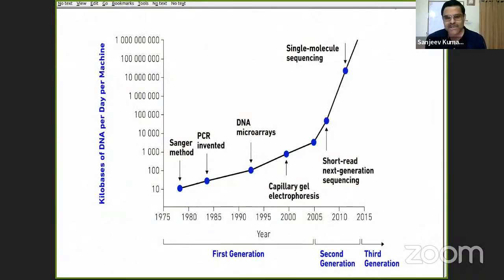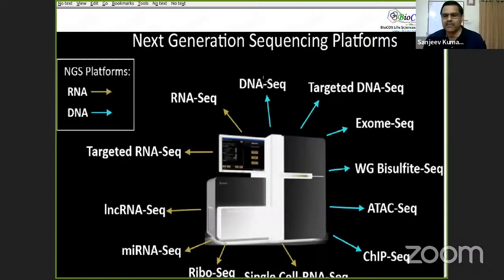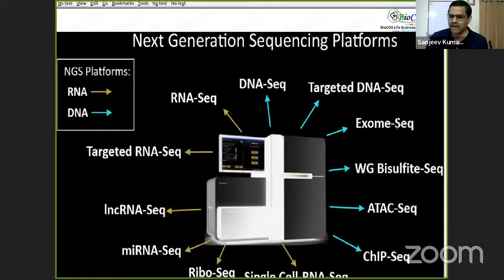Looking at the history of NGS: we had Sanger methods and DNA microarrays, which were the first high-throughput platforms. The field was then revolutionized by Illumina short-read sequencing around 2008. Now we are in the era of single molecule sequencing and single cell — the third generation. Various protocols exist: DNA protocols for targeted analysis like exome and amplicons, epigenetics protocols, and RNA transcriptomics including single cell and small RNAs.